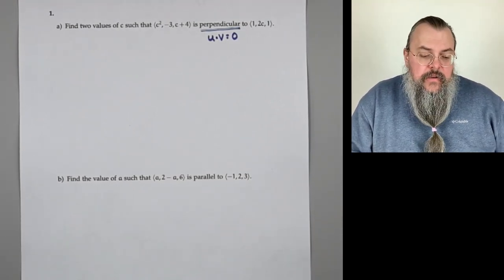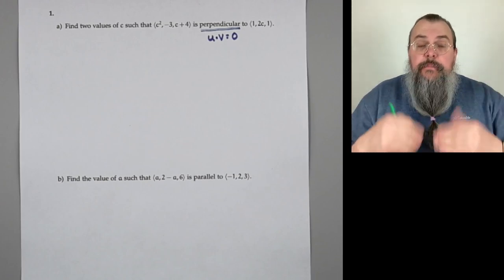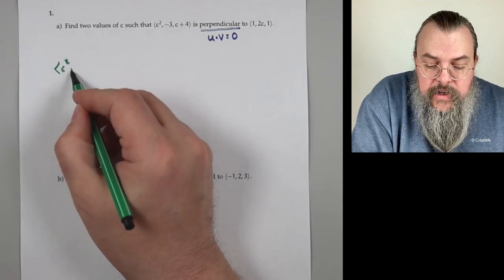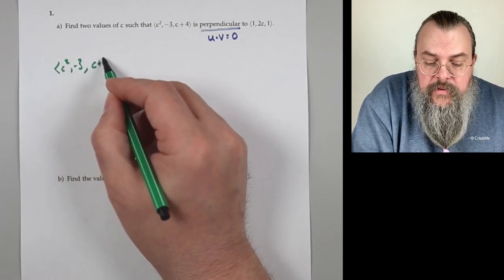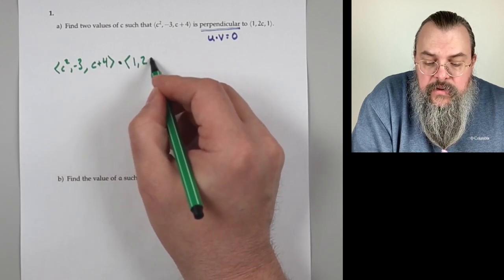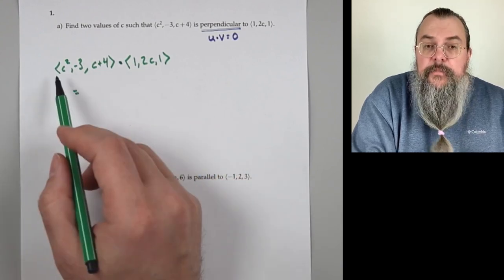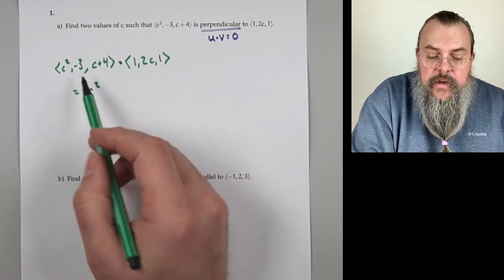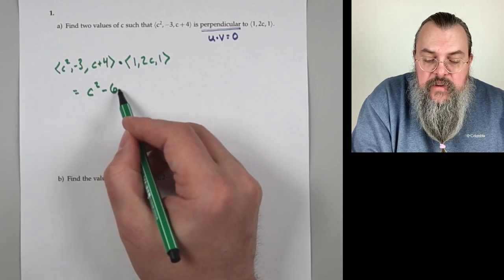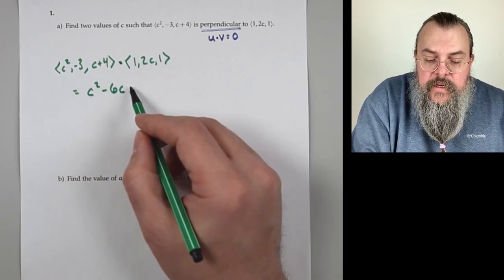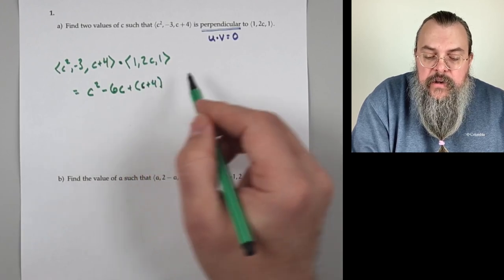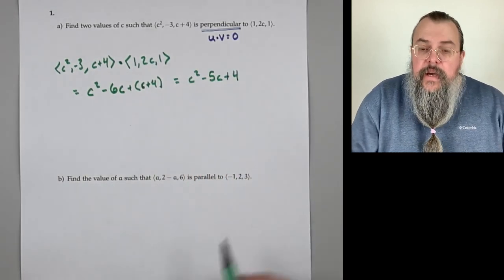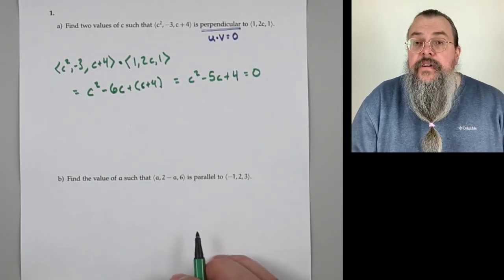So what we're going to do is take these two vectors, take their dot product, set it equal to zero. We'll have ⟨C², -3, C+4⟩ · ⟨1, 2C, 1⟩. Remember, that just means multiply the corresponding entries and add. So C² times 1 is C², minus 3 times 2C is -6C, and C+4 times 1 is C+4. That gives us C² - 5C + 4, and our goal is to set this equal to zero.